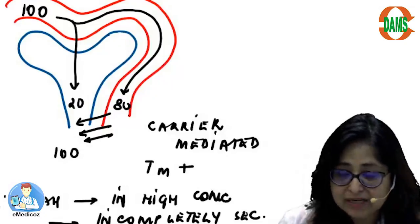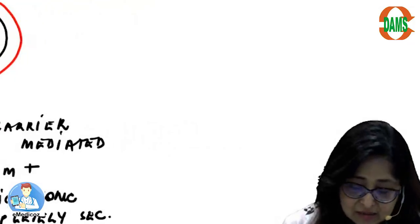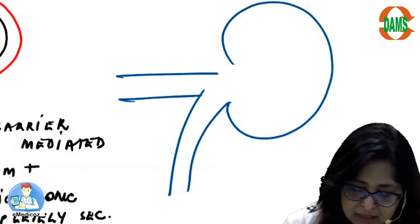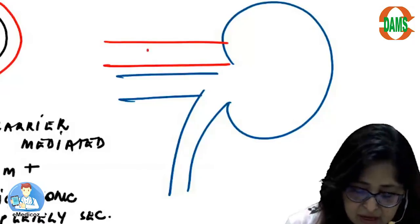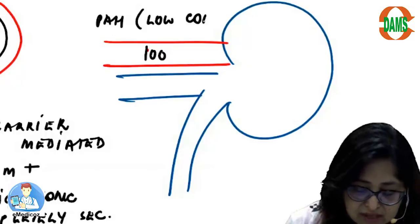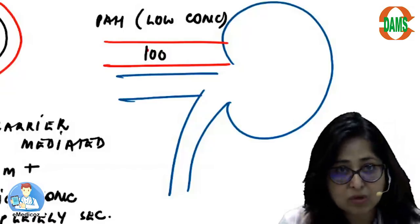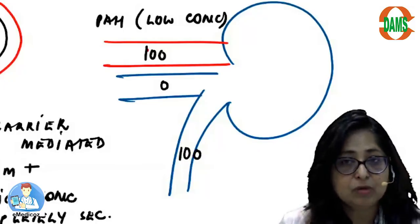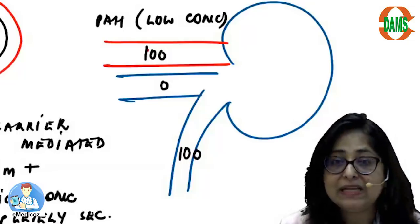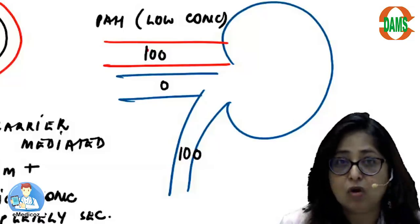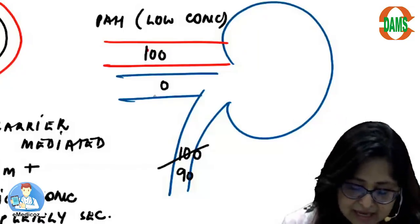If I extrapolate this at the level of the kidney as an organ — with the ureter, the renal vein, and the renal artery — if I have 100 of para-aminohippuric acid in low concentration in the renal artery, going by what we've discussed, I would expect 100 in the urine and 0 in the renal vein. But practically, this is not what we see. We find 90 in the urine and 10 in the renal vein.